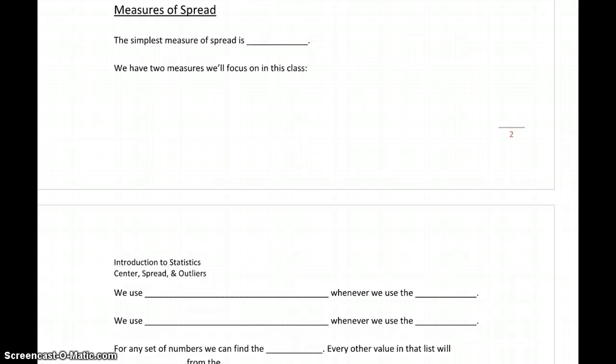But we can start with the simplest measure of spread, which is range. Range isn't used very often in more scientific uses, statistical uses, but it's our easiest way to understand how much spread there is in our data.